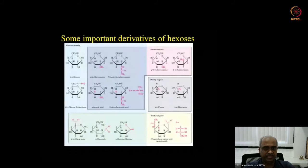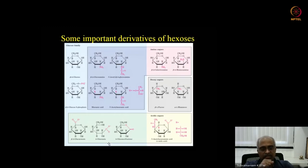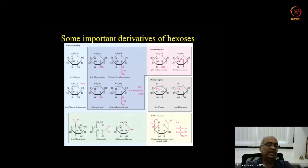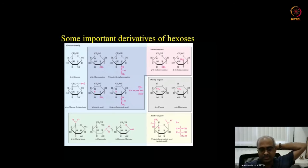Other modified sugars include galactosamine and mannosamine. Some sugars have a methyl group instead of a hydroxyl at C6 — for example fucose (from galactose) and rhamnose (from mannose). When the aldehyde at C1 is oxidized to a carboxylic acid, the product is an aldonic acid — for example, gluconic acid (gluconate), which readily forms a ring called gluconolactone. Oxidation at C6 instead gives an alduronic acid — for example, glucuronic acid.